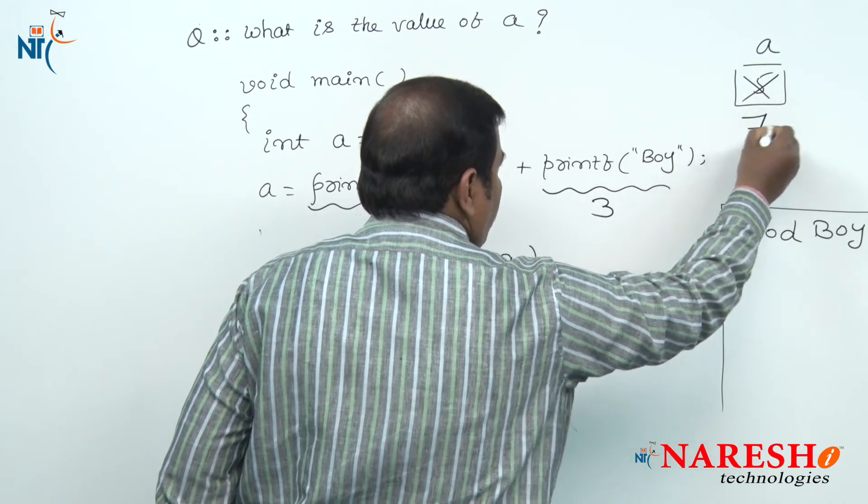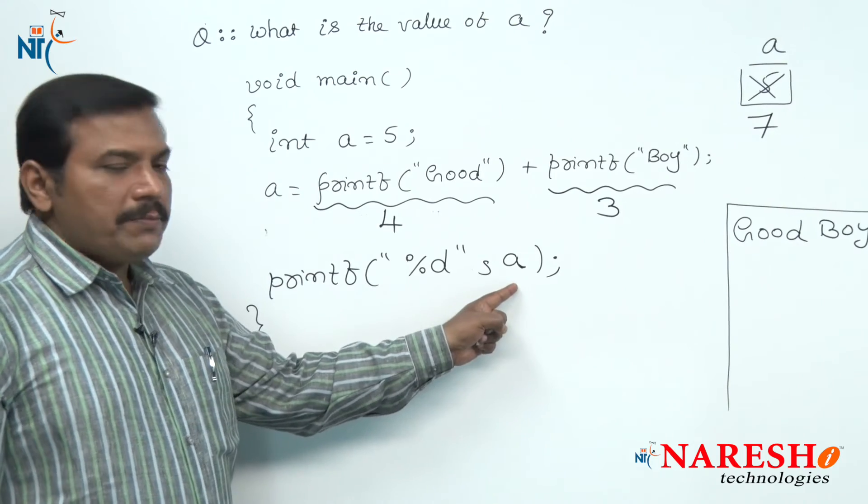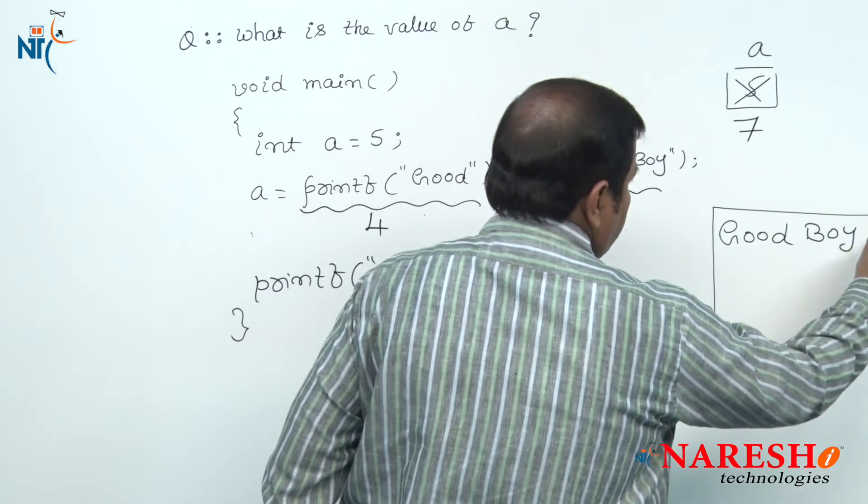Now the value held by A is 7. The last printf statement prints the A value 7 onto the screen.